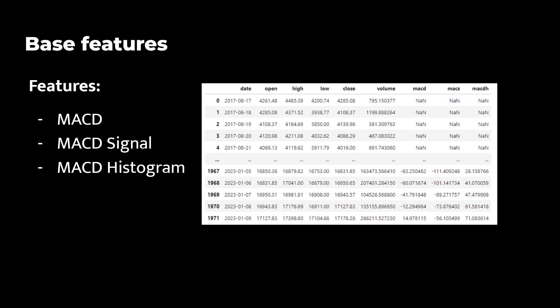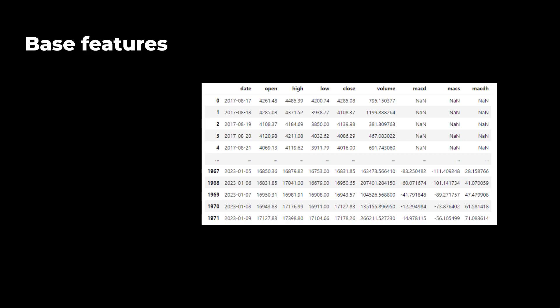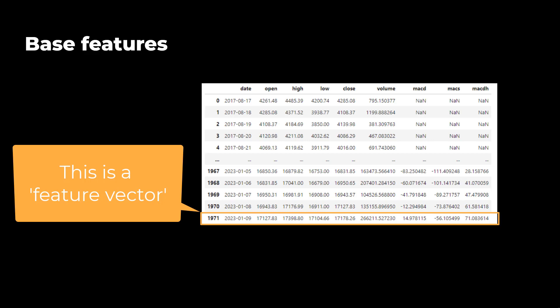In other words, a feature is a property of a candle, which is represented in the row. Now each of these rows is called a sample, item or data point in machine learning. And these terms are sometimes used interchangeably. And one sample with all its features is called a feature vector. It contains all the features in one sample.